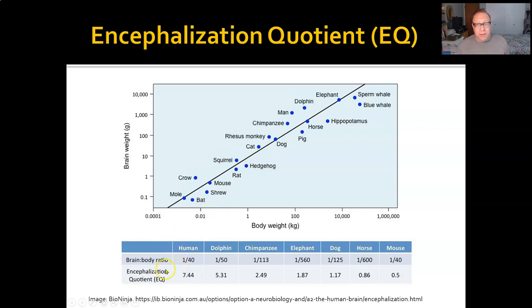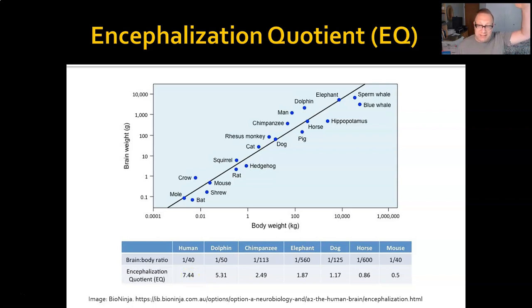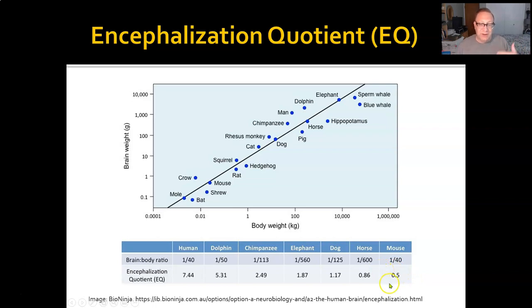You can see these brain-to-body ratios in the EQ even better when you look at it this way. The EQ for a human is 7.44, so that is considerably above 1 — we have much bigger brains than you would expect for our body size. Dolphins come in next, then chimps, elephants, dogs, horses, and mice. Mice only have an EQ of 0.5, so they are significantly below the expected. I wish they had put shrews on there — that would be an even smaller number.